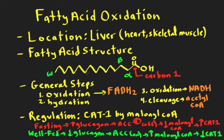We're also going to talk about regulation. The primary mode of regulation of fatty acid oxidation is actually the entry of the fatty acids into the mitochondria, where all of these oxidative enzymes are located, and we'll discuss that at the very end.